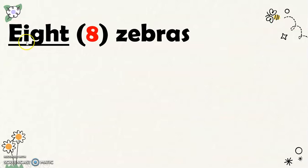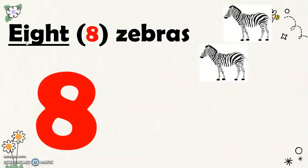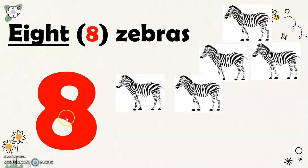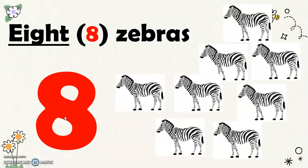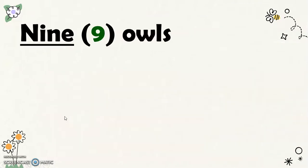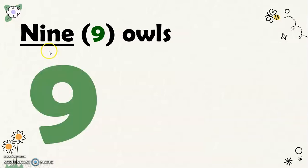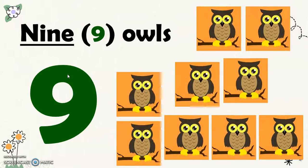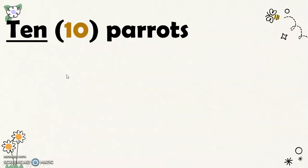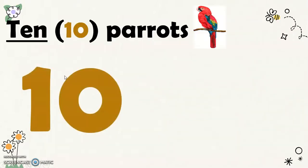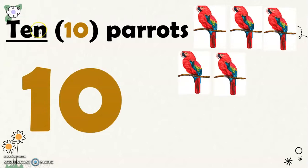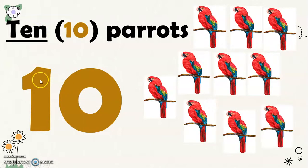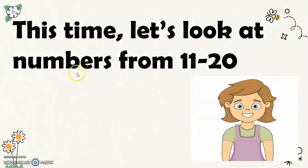Next, there were eight zebras in the zoo. This is the number word for eight and the number symbol for eight. Next, there were nine owls in the zoo. This is the number word for nine and this is the number symbol for nine. And of course, there were ten parrots in the zoo. This is the number word for ten and this is the number symbol for ten.